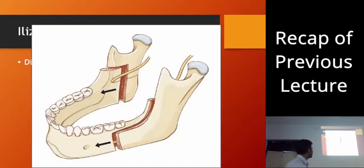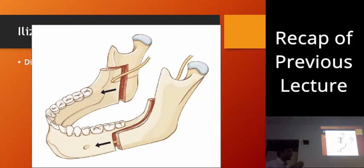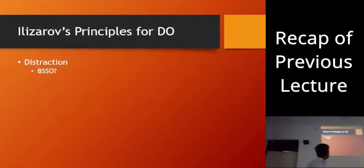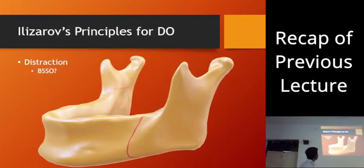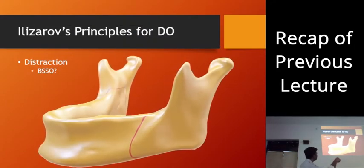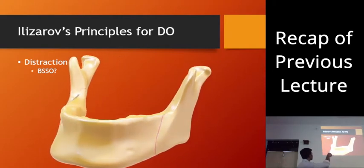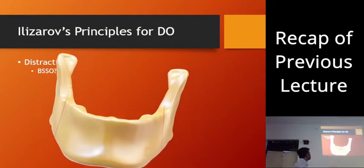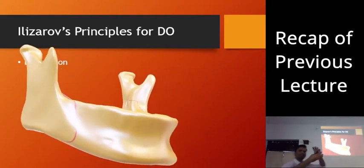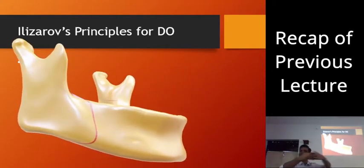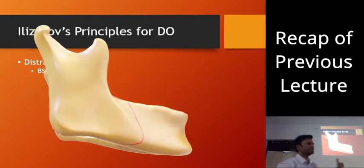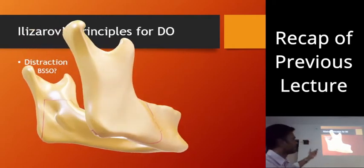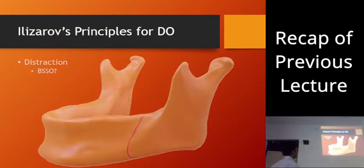As mentioned earlier, in BSSO, if we keep the osteotomy cut such that the two segments are overlapping each other, when we pull them apart there won't be any thinning because they are overlapping. So then we can increase the distraction rate to two mm per day.